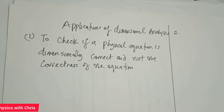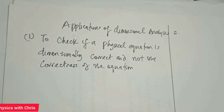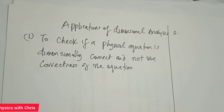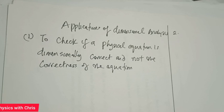In this video, I'll be taking time to look at the applications of dimensional analysis. I'm going to look at just two of them. The first one is to check if a physical equation is dimensionally correct — and not the correctness of the equation. So with the knowledge of dimensional analysis, we can verify whether a physical equation is dimensionally correct.